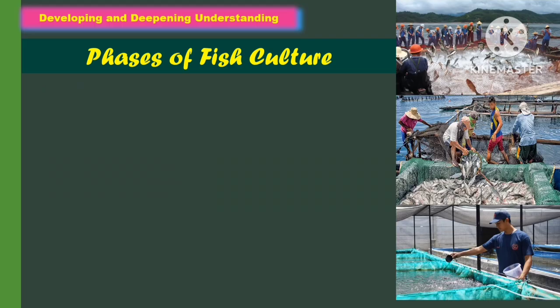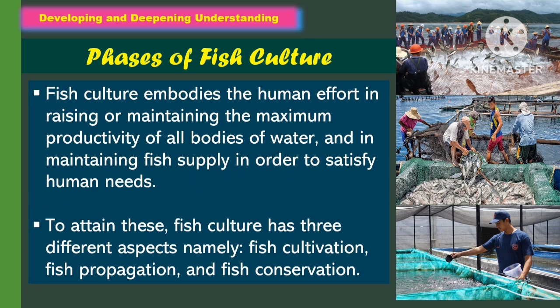For developing and deepening of understanding, let us learn about the phases of fish culture. Fish culture embodies the human effort in raising or maintaining the maximum productivity of all bodies of water and in maintaining fish supply in order to satisfy human needs. To attain this, fish culture has three different aspects: fish cultivation, fish propagation, and fish conservation.